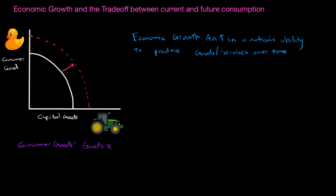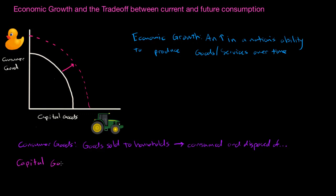A rubber ducky in our PPC is a consumer good — a good intended to be sold to households. Consumer goods are used for consumption and ultimately disposed of. Capital goods are different. Capital goods are any goods sold to firms and are used to produce other goods. Therefore, if society allocates more resources towards capital goods today, society is essentially choosing to produce more goods and services in the future, with the trade-off being fewer goods and services produced today.